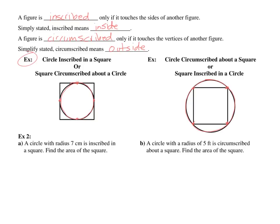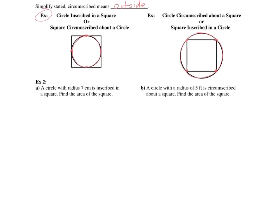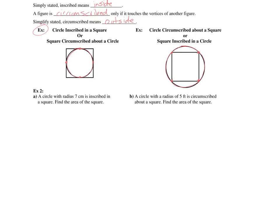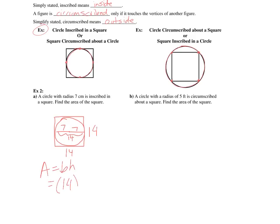For example two, a circle with radius 7 centimeters is inscribed in a square. Inscribed means it's inside the square. The radius is 7, so the diameter is 7 plus 7, which is 14 altogether. Each side of the square is 14, so the area of the square is base times height — 14 times 14. The area is 196. Very simple problem.